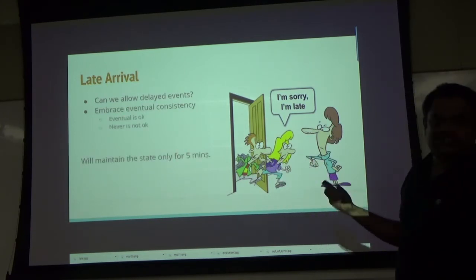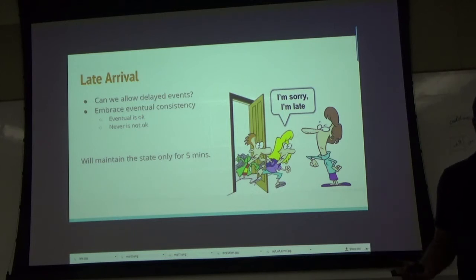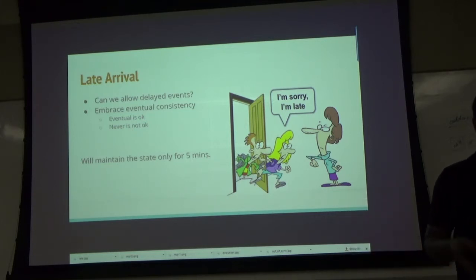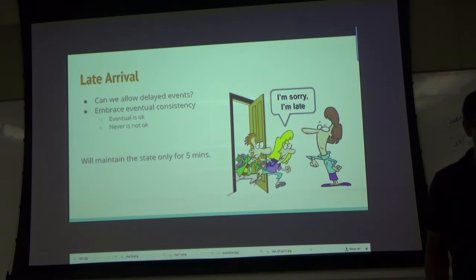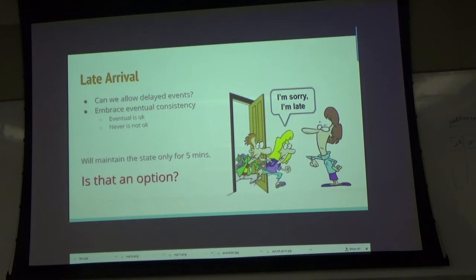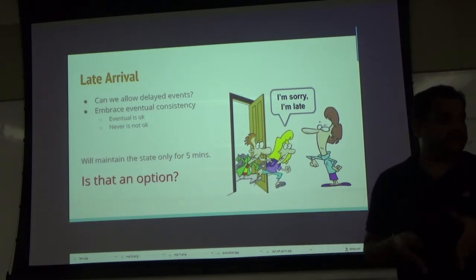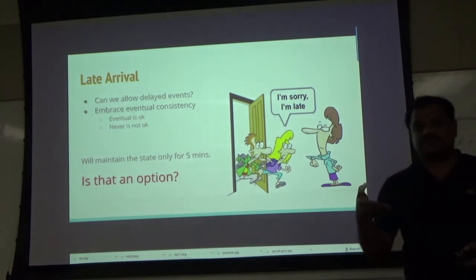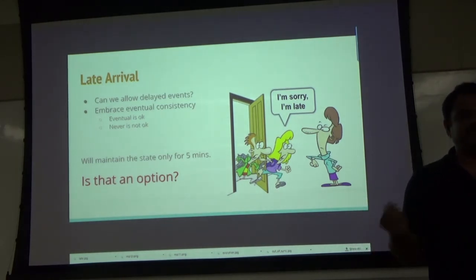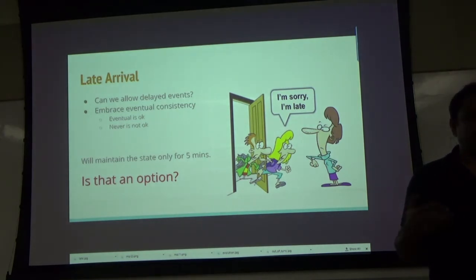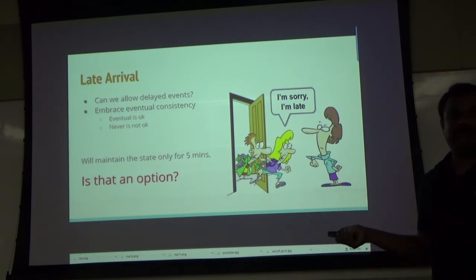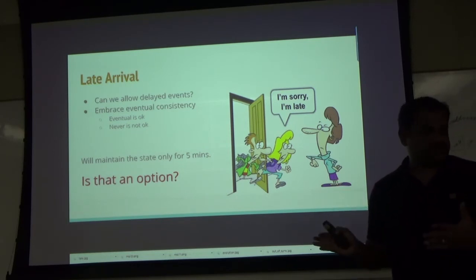Eventually consistent is acceptable, but never is not — data loss is unacceptable. Many streaming technologies only maintain state for a window (5 minutes, 30 minutes), not indefinitely, though this is evolving. Whether 5-minute state is sufficient depends on your application: for clickstream data with acceptable minimal data loss, it may be fine. For financial records, it is not acceptable. You must make the decision based on your data type.